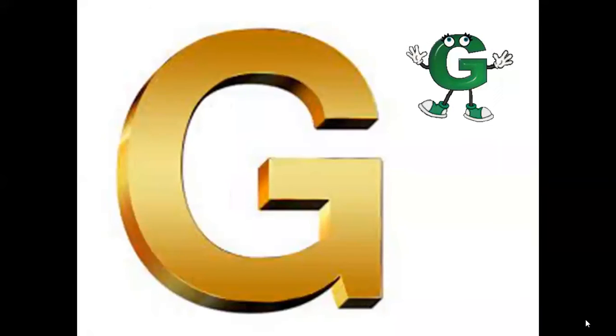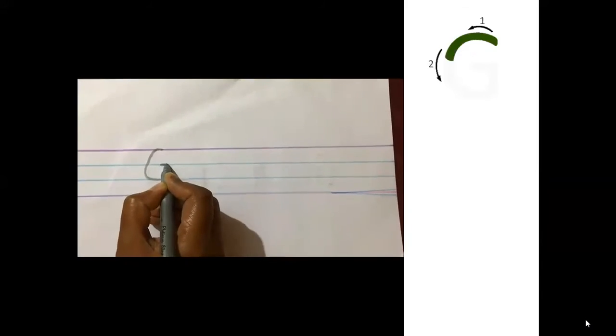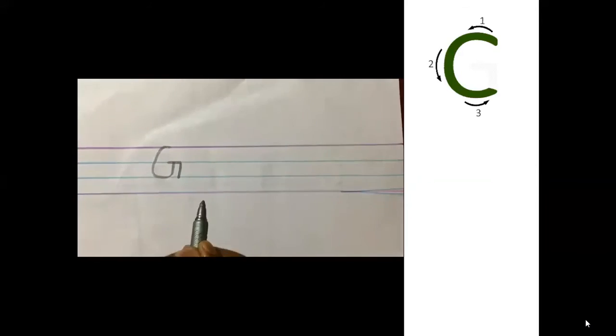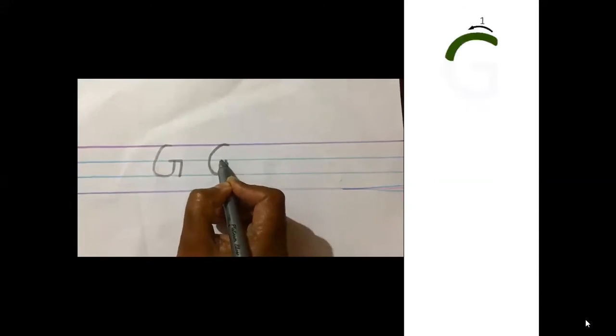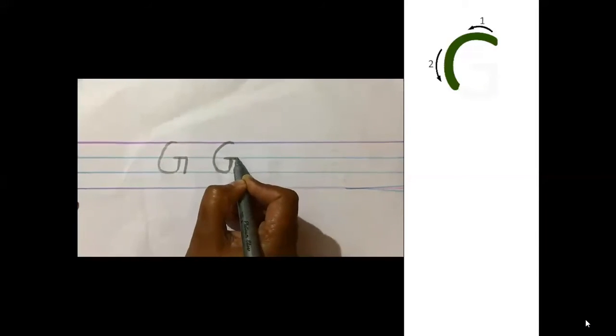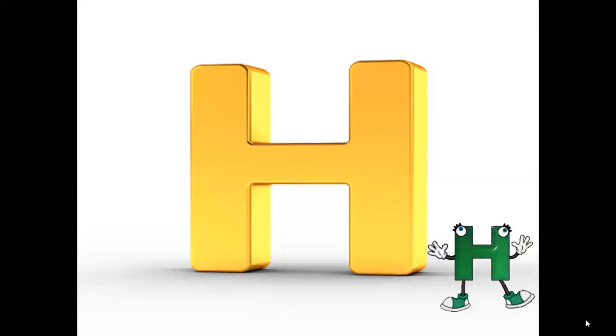Now let's see how to write the letter capital G. First, we draw a forward curve from the first to the third line. And then we move up and draw a sleeping line, and then down a short standing line. We draw a forward curve and move up to the second line, then a sleeping line and then a short standing line. That makes our capital G.